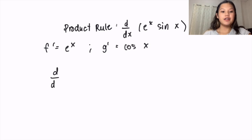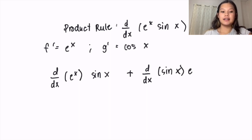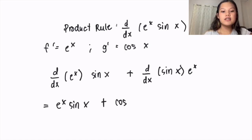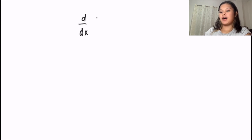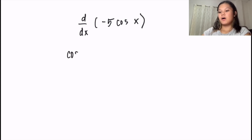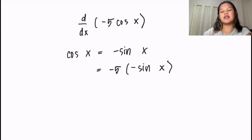We have the derivative of e to the power of x times sin x plus the derivative of sin x times e to the power of x, and we get e to the power of x sin x plus cos x times e to the power of x. For the derivative of negative 5 cos x, we find the derivative of cos x which is negative sin x, and we cannot forget the constant negative 5 — place it outside the parenthesis and multiply. So the derivative gives us 5 sin x.